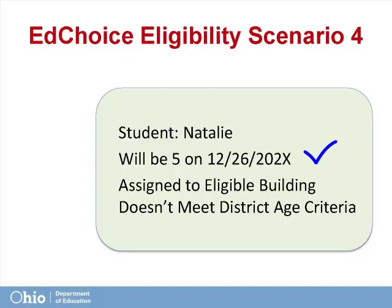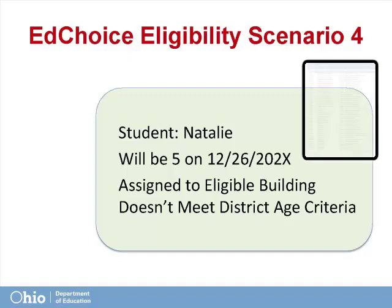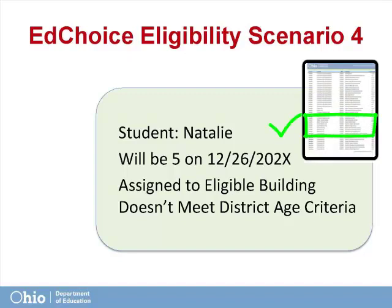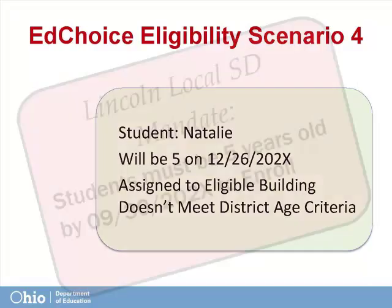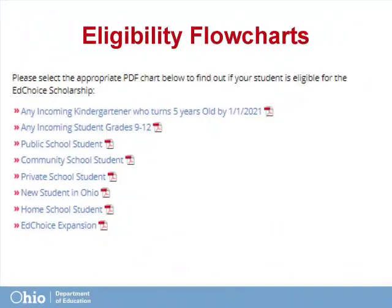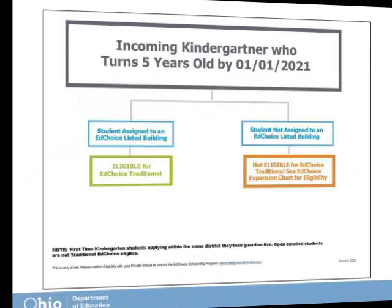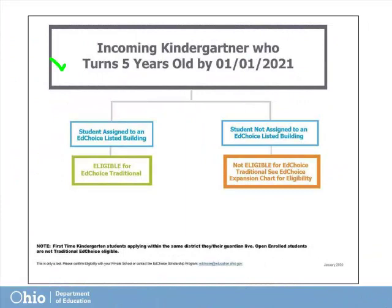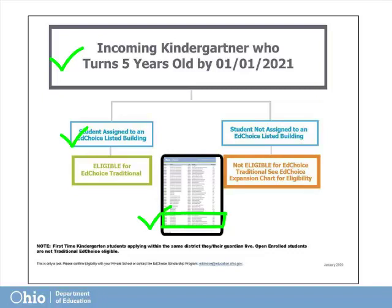Our next example is Natalie, an incoming kindergartener who is 4 years old with a birthday on December 26th. Her residence suggests she would be assigned to Clark Elementary School, an EdChoice listed building in Lincoln Local Public School District. However, Lincoln Local mandates that all incoming kindergartners must be at least 5 years old by September 30th to enroll in kindergarten. Using the incoming kindergartener who turns 5 by January 1st flowchart, we verify that Natalie will be 5 years old by January 1st and would be assigned to a listed building in her resident district. Therefore, she is traditional EdChoice eligible.